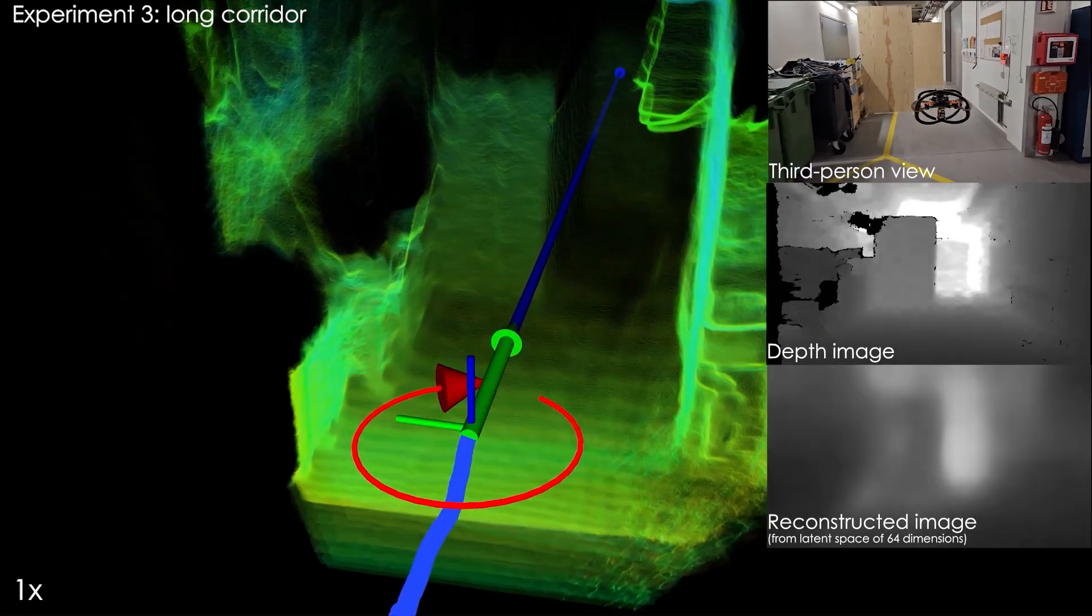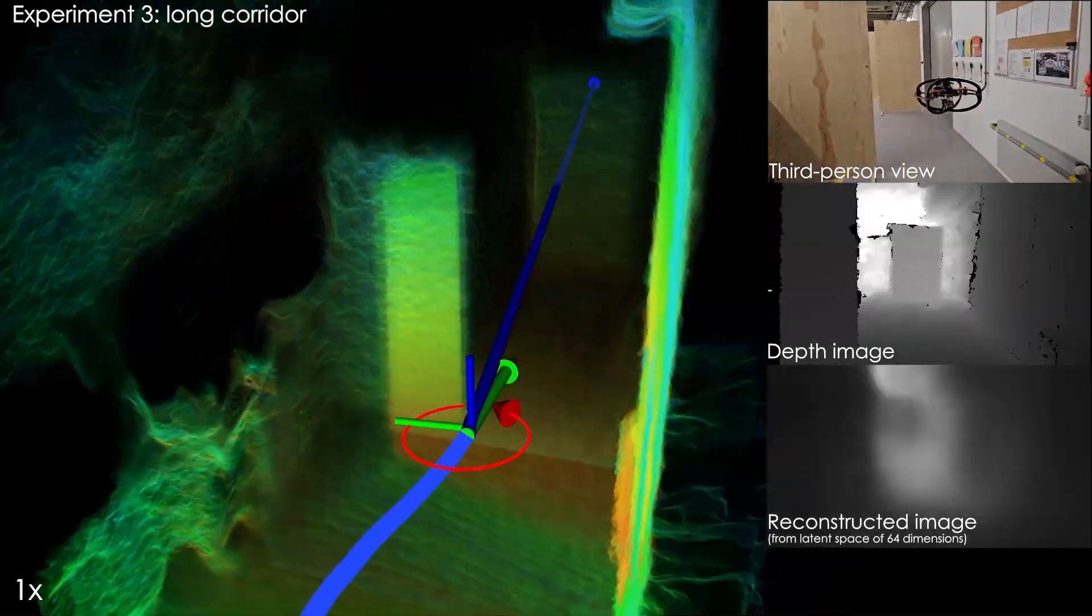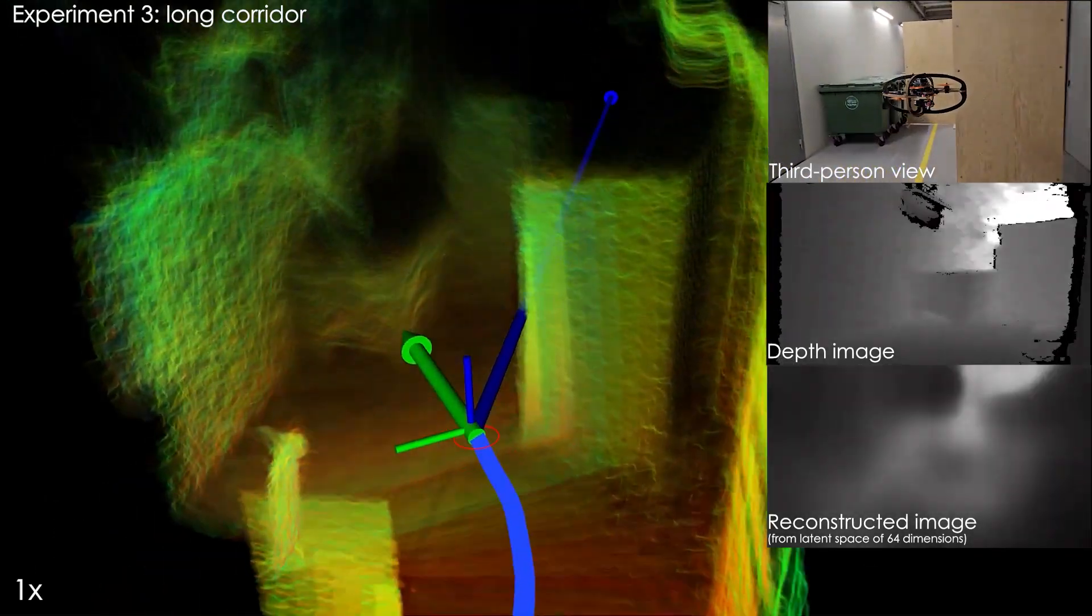In the final experiment, the robot navigates a different environment and chooses an intuitive short path through a narrow gap between the panel and wall to reach the goal location.